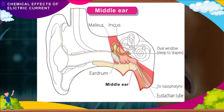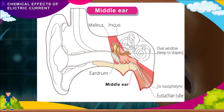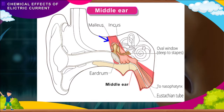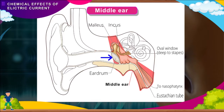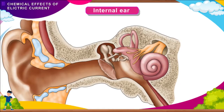The middle ear is composed of a stretched membrane and three small bones. The stretched membrane is called the eardrum and the small bones are called bony ossicles. These are named sequentially from outside to inside as malleus, incus, and stapes. When sound waves come to the middle ear, it sets vibrations in the eardrum. After that, sound waves are transferred from the eardrum to the three bones.